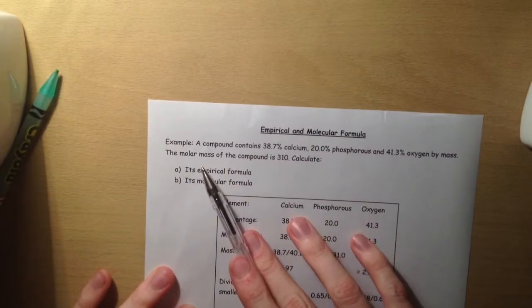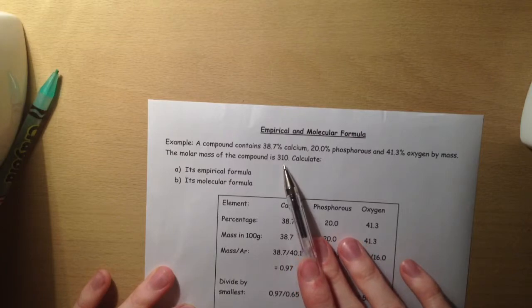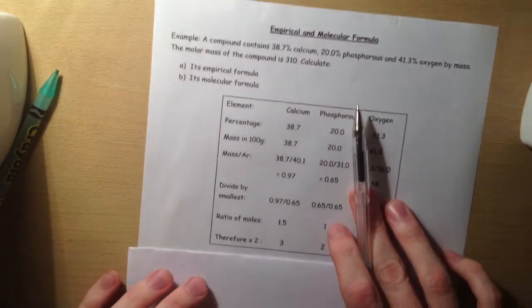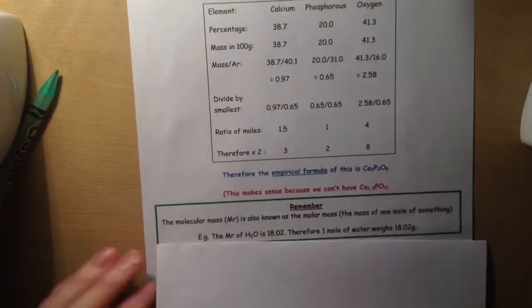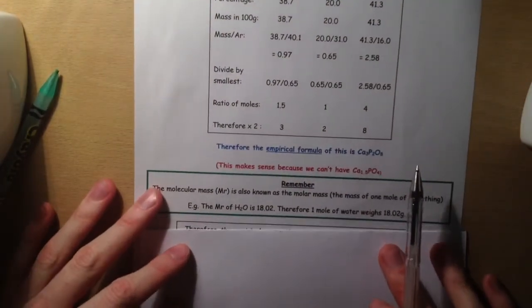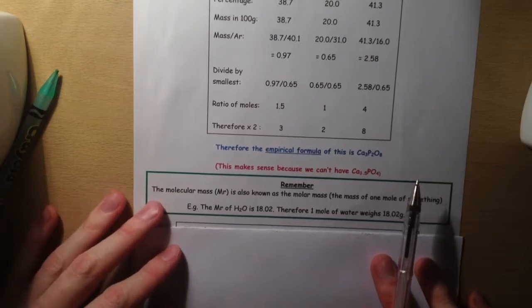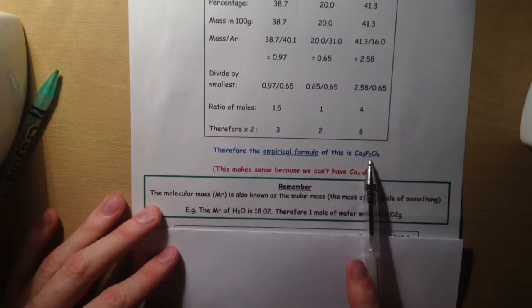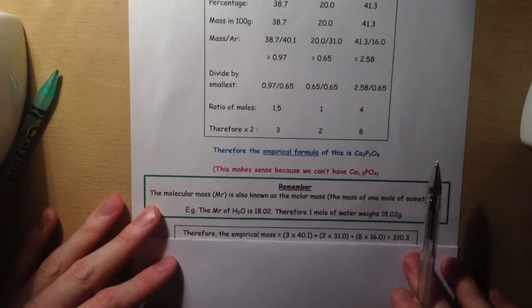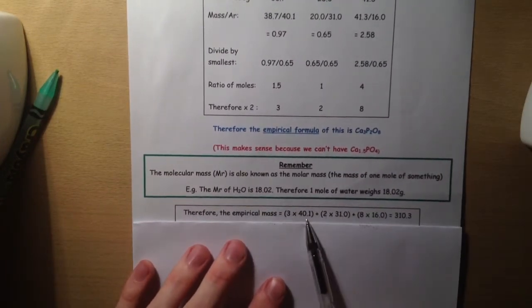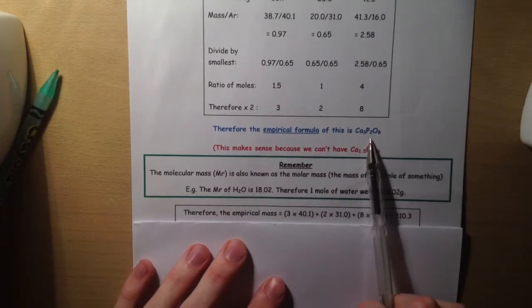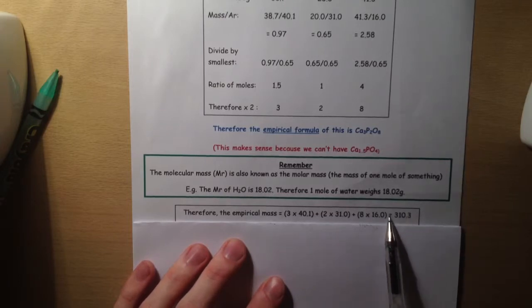This is telling us that one mole of this compound weighs 310 grams. We have to work out the empirical mass first using this formula. We're going to do 3 times 40.1 for calcium, 2 times 31.0 for phosphorus, and 8 times 16.0 for oxygen, which gives us an empirical mass of 310.3.